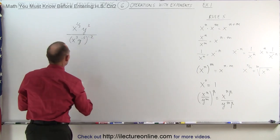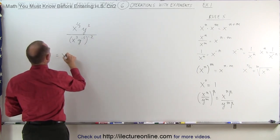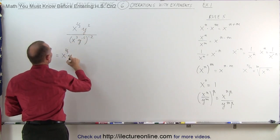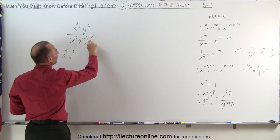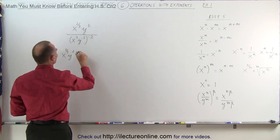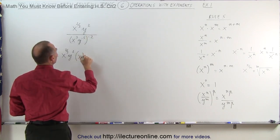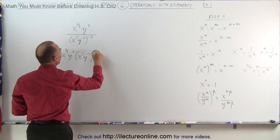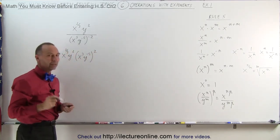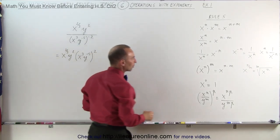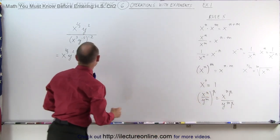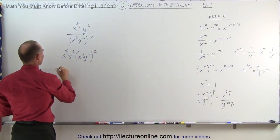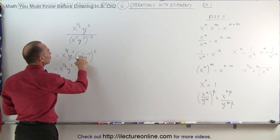Notice in the denominator I have a negative 2 exponent. There are many ways to get to the correct answer, so I'll do this in two different ways to show that you can get to the same answer applying the rules in a different order. What I'm going to do first is move this to the numerator to turn it into a positive exponent. So this becomes x to the two-thirds, y to the second power — those stay the same — but this now goes to the numerator, changing the negative 2 to a positive 2 exponent. So this becomes x cubed, y to the minus 5 power, raised to the positive 2 power.